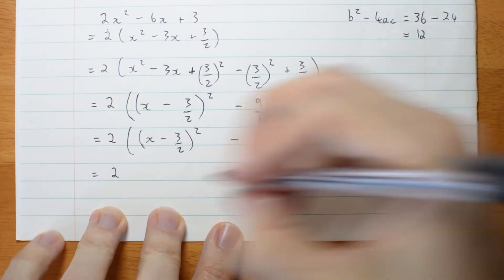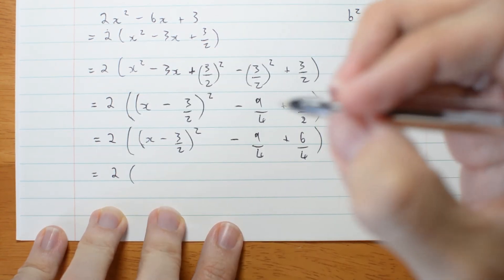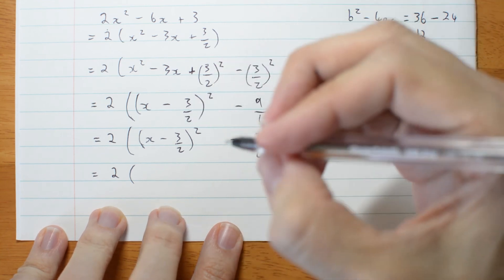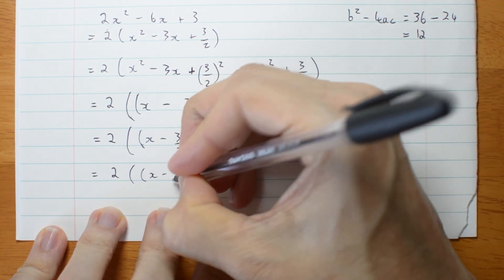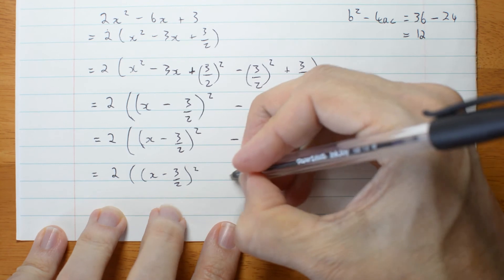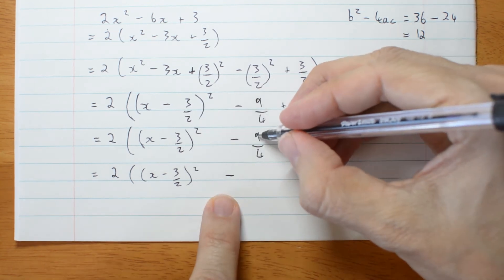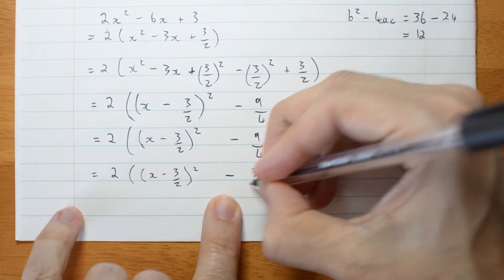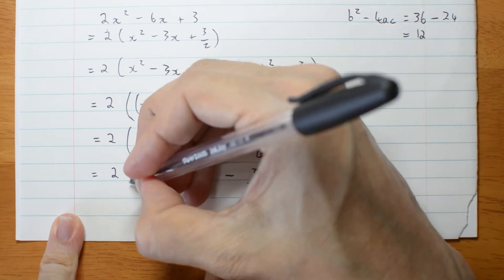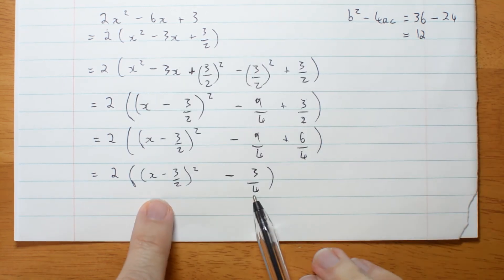Well, I think I'm going to run out of room here. x minus 3 on 2 squared minus, minus 9 plus 6 is minus 3. And now I have a difference of squares.